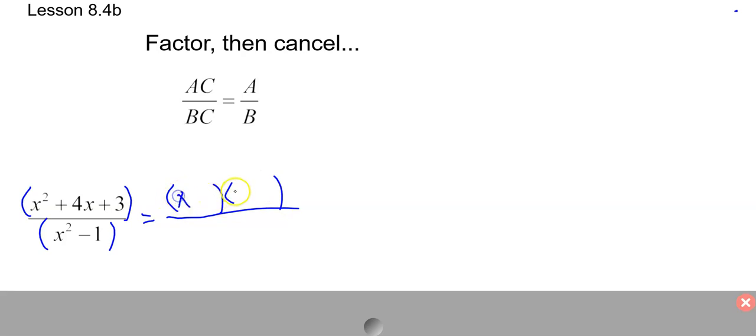So if you factor that, it's X and X, 3 and 1, looks like plus and plus. And this one should be easy to factor down there, difference of squares. X and X, 1 and 1, one's plus, one's minus. And you can see definitely some of that goes away and you're left with X plus 3 over X plus 1.